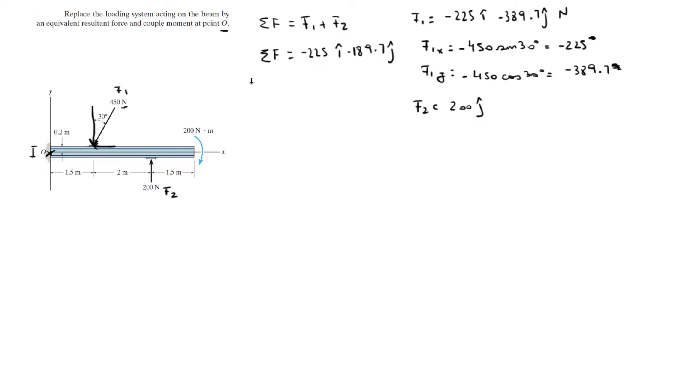But they usually want it in polar form. The magnitude of the resultant force is given by 225 squared plus 189.7 squared, all square rooted. And that gives you that the magnitude of the resultant force is 294.3N.